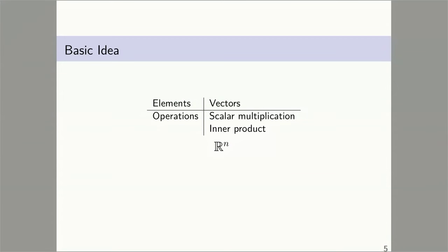Here's the basic idea. We'll start with R^n, the vector space for n-dimensional space. R^n has certain elements, certain members. They're called vectors. And there are two operations on R^n.